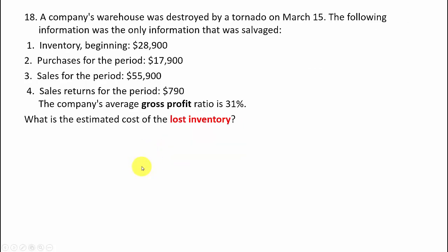Let's go on to question number 18. A company's warehouse was destroyed by a tornado on March 15th. The following information was the only information salvaged: beginning inventory $28,900; purchases for the period $17,900; sales for the period $55,900; sales returns for the period $790; and the company's average gross profit ratio is 31%.